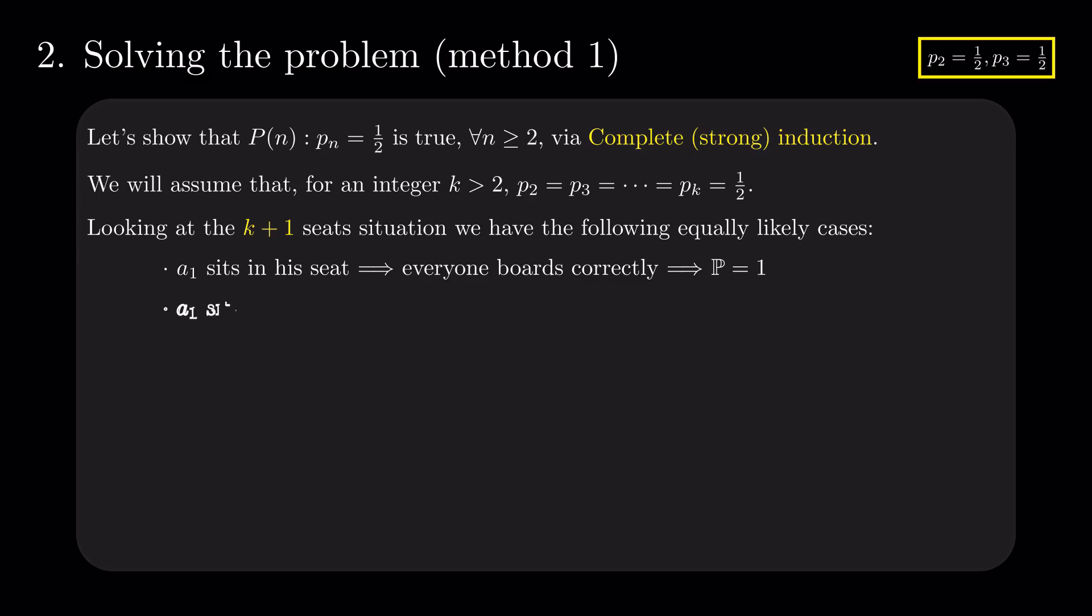A1 sits in A2's seat, so A2 picks randomly, and by putting A2's name on A1's seat, we are in the case with k passengers, so the last one will sit in his assigned place with probability Pk. A1 sits in A3's seat, sparing A2 of the inconvenience but passing it to A3, who picks randomly, and as before, leaving us in the case with k-1 passengers, so the last one will sit in his assigned place with probability Pk-1.